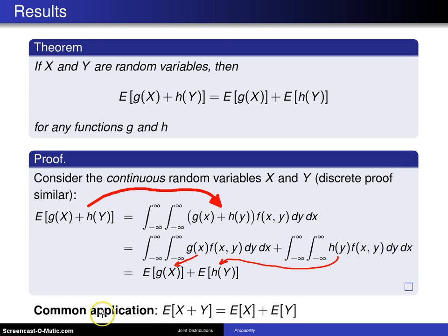A very common application of this theorem is when g of X is just X and h of Y is just Y. The expected value of X plus Y is the expected value of X plus the expected value of Y. And that is a result that is used quite often when working with sums of random variables.